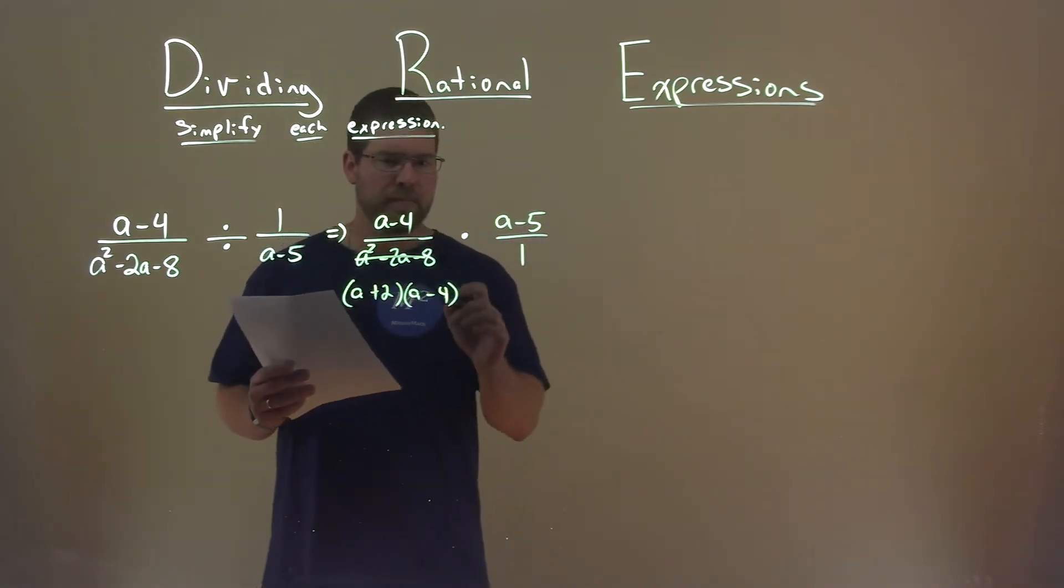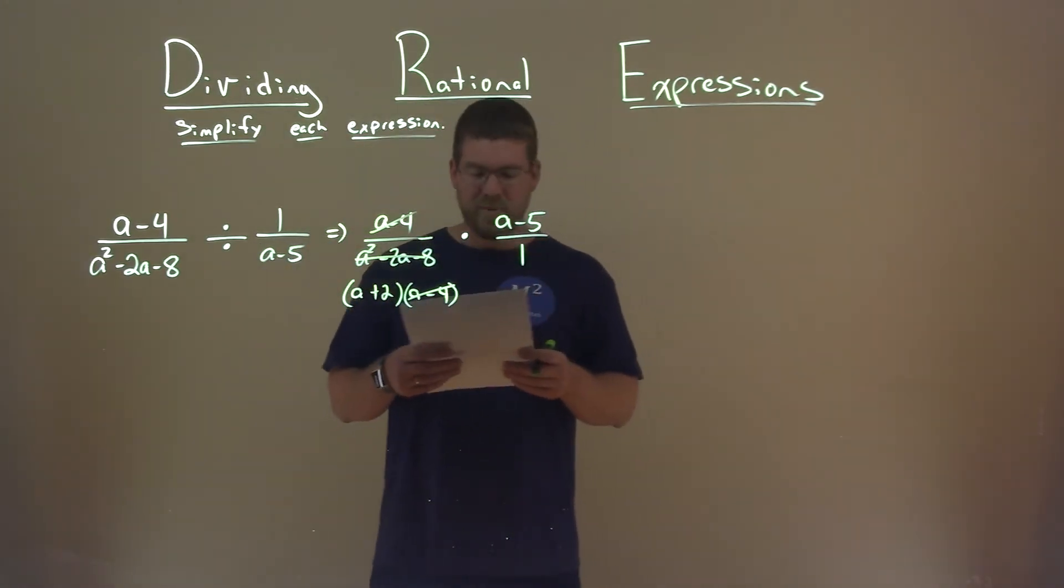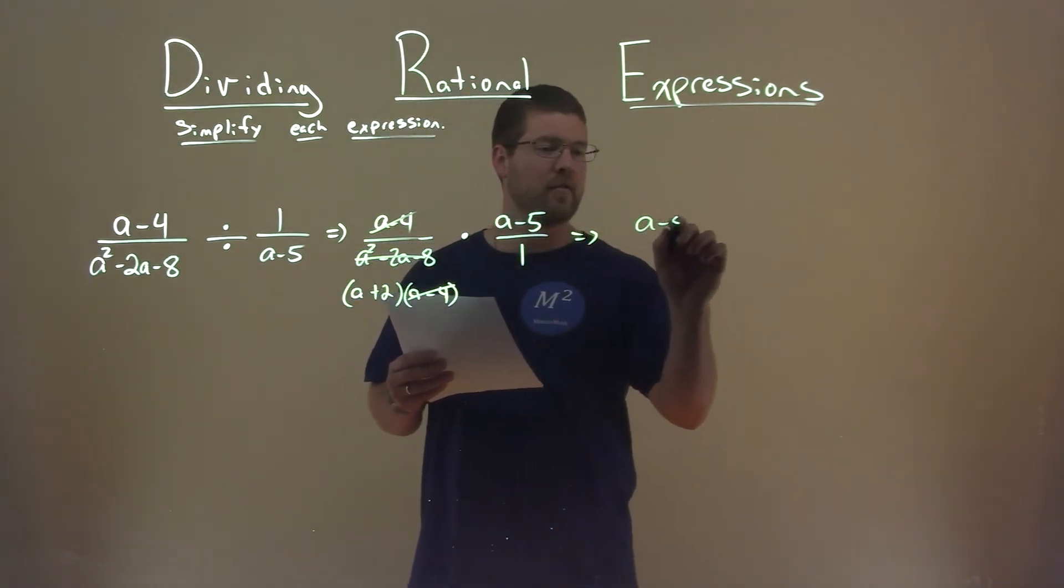Now, what can cancel out? Well, a minus 4 and this a minus 4 cancels out, and really nothing else. So what's left in the numerator? a minus 5 is left over.